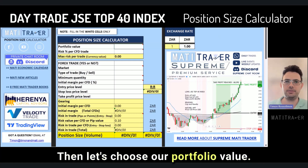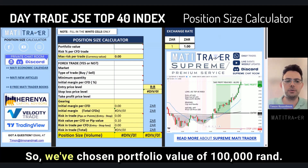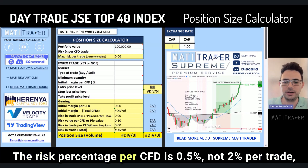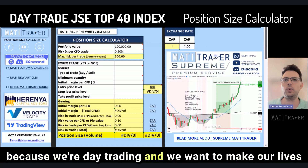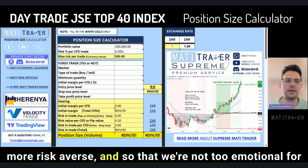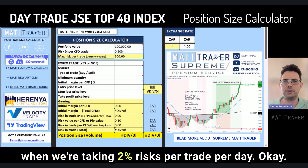Let's choose our portfolio value — we've chosen 100,000 Rand. The risk percentage per CFD is 0.5%, not 2% per trade, because we're day trading and we want to be more risk averse so that we're not too emotional when taking 2% risks per trade per day.